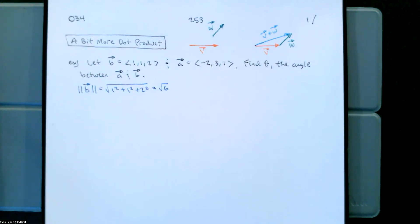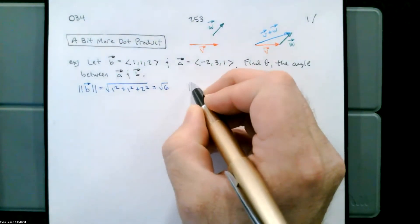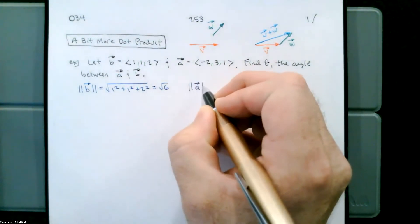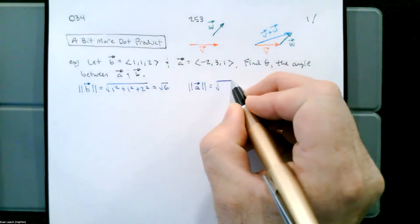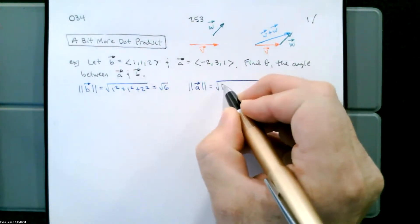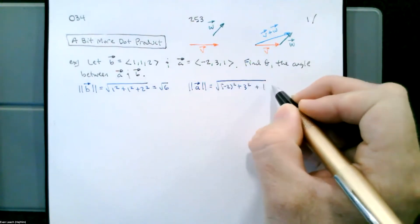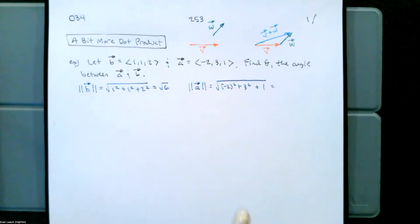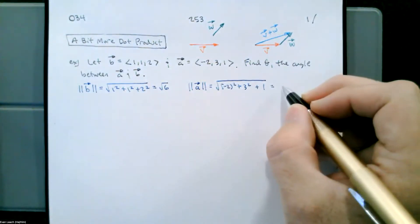We're going to need three things: the magnitude of each of these vectors, and the dot product of the vectors. The magnitude of B is the square root of 6. The magnitude of A is the square root of negative two squared plus three squared plus one — so four plus nine plus one gives us 14, meaning the magnitude of A is the square root of 14.